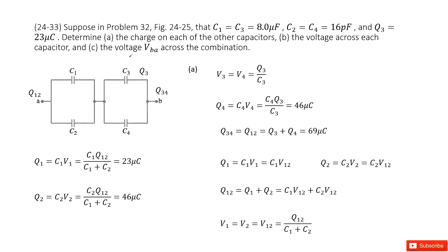We start from the beginning. We can see that C1 and C2 are in parallel connection, and can be replaced with an equivalent capacitance C12. Similarly, capacitors C3 and C4 are also in parallel connection, with equivalent capacitance C34.